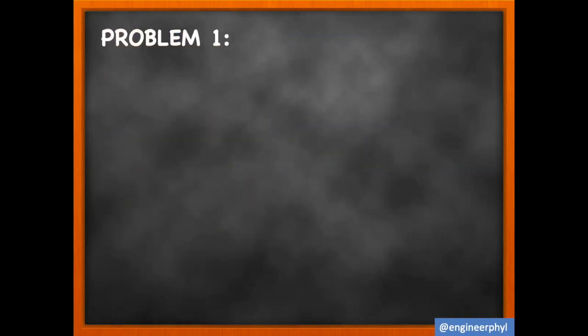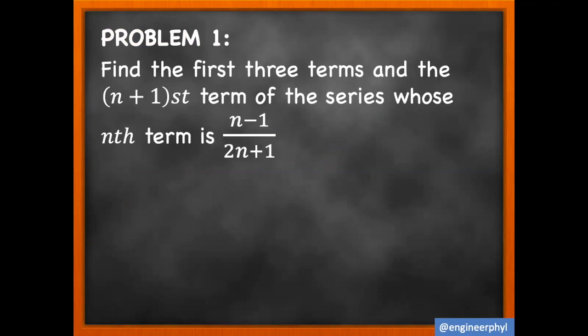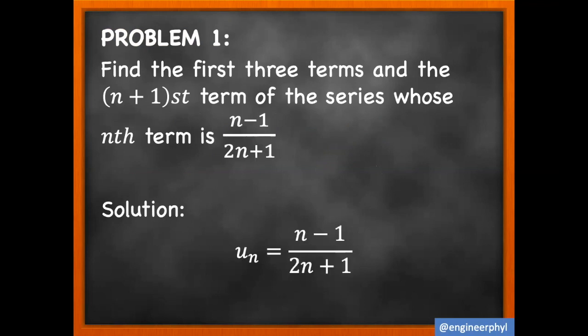Let's solve problem number one. Find the first three terms and the (n+1)th term of the series whose nth term is (n − 1) / (2n + 1). Since we are given the nth term of the series, which is (n − 1) / (2n + 1), we now let n equal to 1.